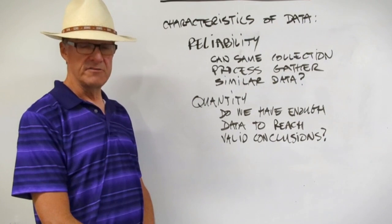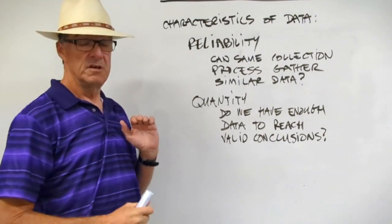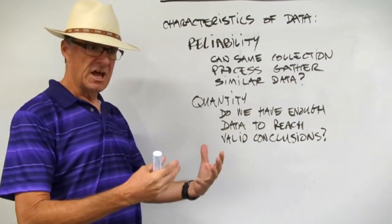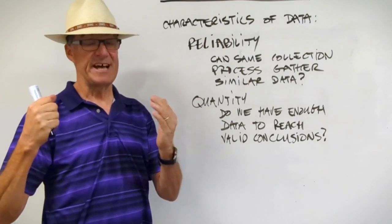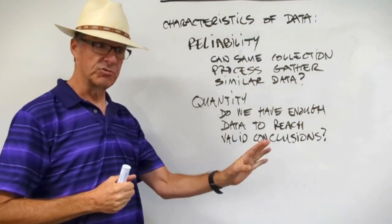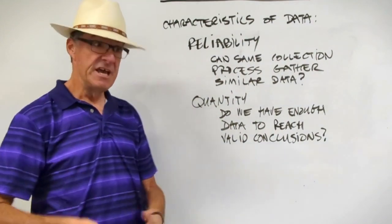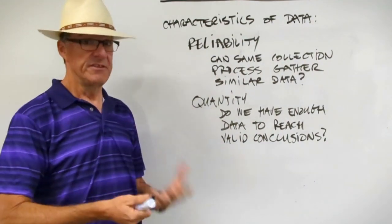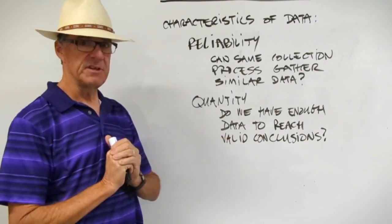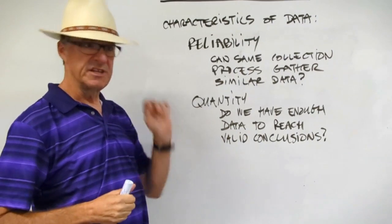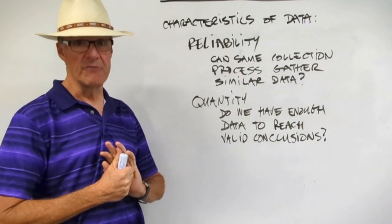Two more characteristics about data that concern us. The first one is reliability. If we go out and collect a bunch of data, and then we analyze it, and then we come to some conclusions, if we did that process again, used the same collection process, would the data tell us roughly the same thing? If that's not true, then we have some problem with the reliability of our data. We're trying to say something about a population. So if we ask the same question in the same way two different times and get different conclusions, there's something wrong there. It's not reliable.